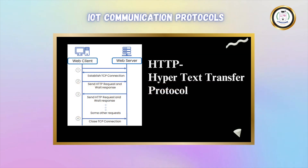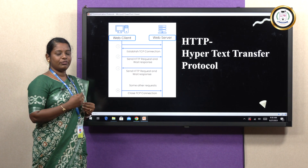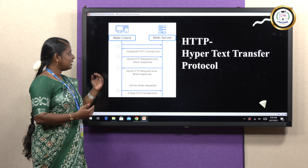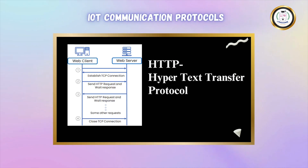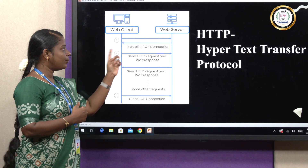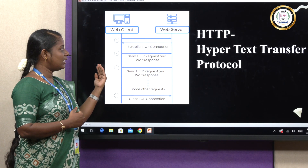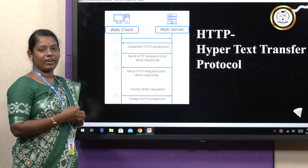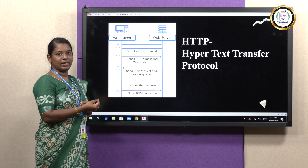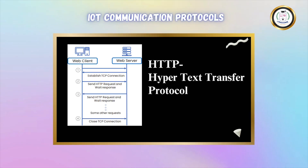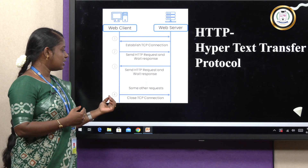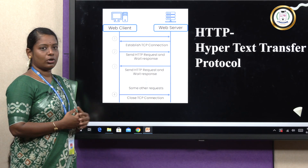First is the HTTP protocol, which is HyperText Transfer Protocol. Using this protocol, if we want to send information from client to server, first a TCP connection is established between the client and the server. Once the link is established, the server receives that connection and establishes the connection back to the client. Once both links are established, the client sends the request to the web server in the form of hypertext. Once the request is received, the web server sends the acknowledgement or response to the client and waits for the response. Once data transmission is over, the client closes the TCP connection. This is the working of HTTP.